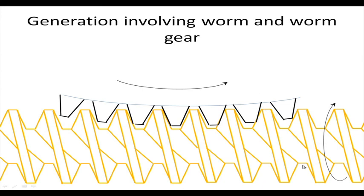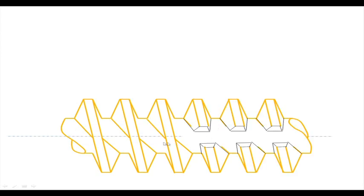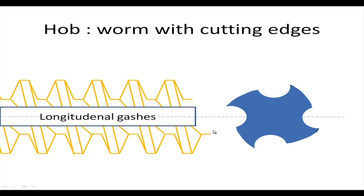The blank will be moving this way and the worm will be moving this way, and this worm will be converted to a cutter by making longitudinal gashes in it. The longitudinal gash means removing whatever material is there to form sharp edges on both sides. How does it look? This is the continuous thread and this is the thread cut open, with this portion removed so that you have sharp edges. From the end, the longitudinal gashes are made — one here, one there — opening up cutting edges.